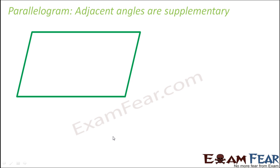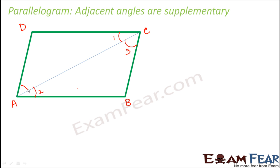Let us now prove that adjacent angles are supplementary - that is, the sum of adjacent angles equals 180 degrees. We consider parallelogram ABCD and draw diagonal AC. Label the angles: angle 1, angle 2, angle 3, and angle 4. We consider triangle ACD. We know that the sum of the three angles in a triangle equals 180 degrees, therefore angle 1 plus angle 4 plus angle D equals 180 degrees.